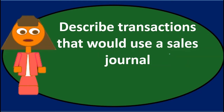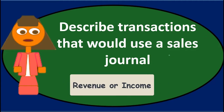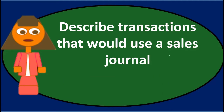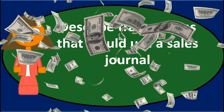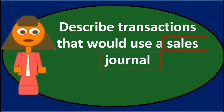The sales journal deals with sales — revenue or income type transactions. The sales journal is a bit tricky because it might seem like all sales would go in it. But if we make a sale for cash, it would not go in the sales journal — it would go in the cash receipts journal.